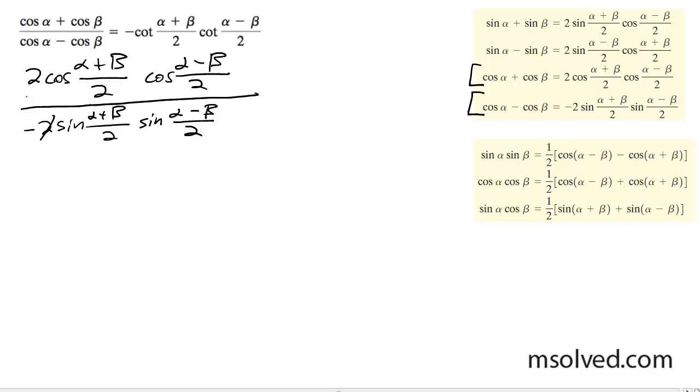Now, these twos will cancel out, and as a result here, we'll be left with negative, and then these terms here will make up the cotangent, cotangent alpha plus beta divided by two.